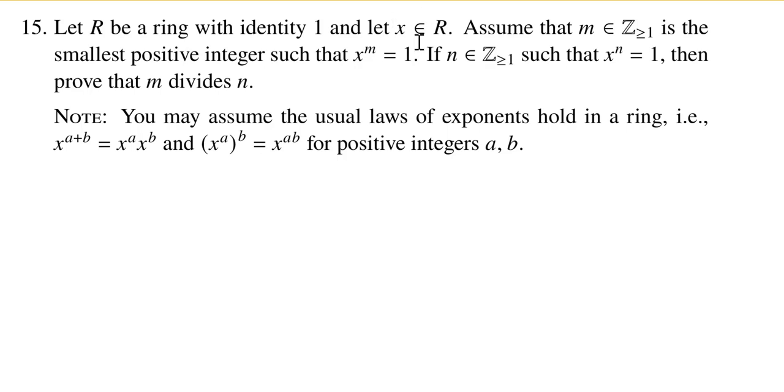We choose some element x in that ring. We assume that m is an integer greater than or equal to 1, and it's the smallest positive integer such that x to the m is equal to 1.